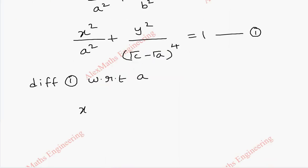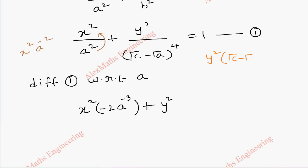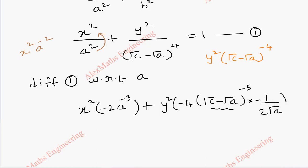x² is a constant, and the first term is x² · A⁻². Differentiating, we keep x² as a constant, and the differentiation of A⁻² gives −2A⁻³. For the second term, y² is constant and the term is y² · (√C − √A)⁻⁴. Differentiating gives −4(√C − √A)⁻⁵, and by the chain rule, the derivative of (√C − √A) is −1/(2√A), since √C is constant. The right-hand side is 0.